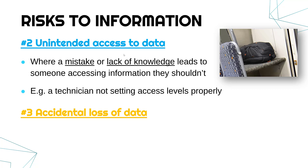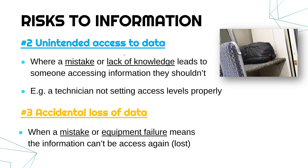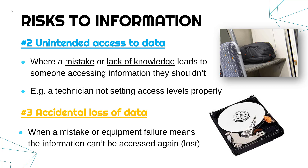Another risk which comes from mistakes and accidents is accidental loss of data. The difference between access and loss is that access is just viewing it, whereas loss is where the data goes and you can't get it back. This is where either a human mistake or a failure of equipment means the information can't be accessed again. Equipment failure is most commonly going to be a storage device. If you've got a hard drive with a disk spinning really fast and lots of things moving inside it — often after a few years these start to fail. You might one day turn on your computer and the read-write head has stopped working, the disk can't spin anymore, and your data might be lost. It's why having a backup is so important.